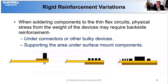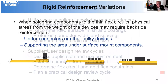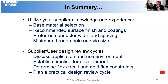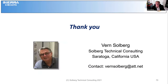To wrap things up: utilize your supplier's knowledge and experience. Base material selection is key. Their recommendations for surface finish and coatings, as well as preferred conductor width and spacing, will give you the best price and reliability. Minimum through holes and via sizes can be supplied. Supplier-user design review cycles are very important — discuss the application and use environment, establish a timeline for development, determine flex circuit and rigid flex constraints, and plan a practical design review cycle. That concludes the talk, and I think we have some time for questions.